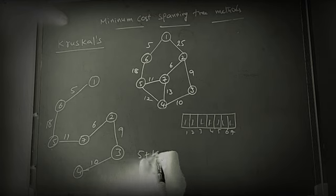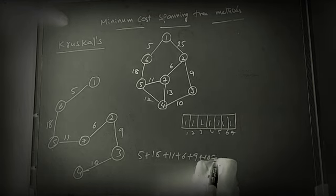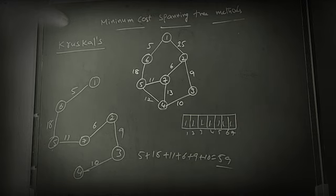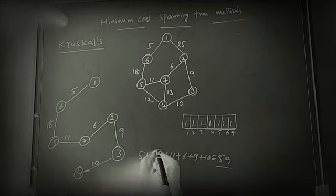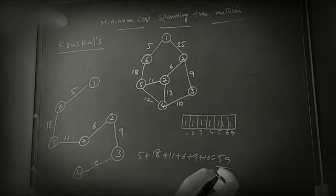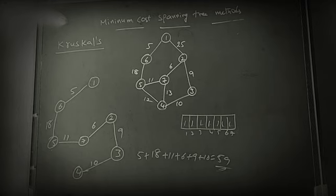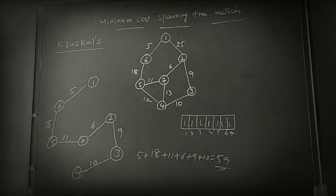Total cost is five, six, nine, ten, eleven, eighteen. So it is also fifty-nine. Either you can use Prim's algorithm or Kruskal's algorithm on the same graph. The cost should be same. So these are two important techniques to find the minimum cost spanning tree from the graph.